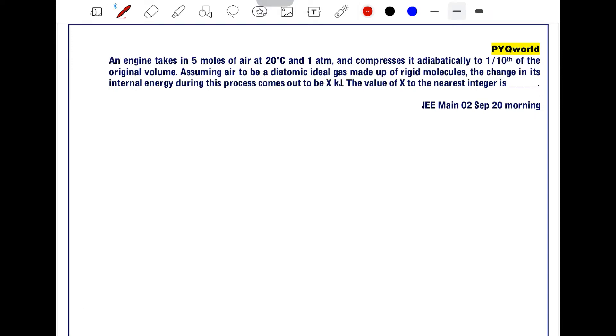An engine takes in 5 moles of air at temperature T = 20°C = 293 Kelvin and pressure P = 1 atm, and compresses it adiabatically to 1/10th of the original volume. If the initial volume is V, then final volume is V/10. Assuming air to be a diatomic ideal gas made up of rigid molecules, the degree of freedom is 5. Find the change in internal energy, delta U.